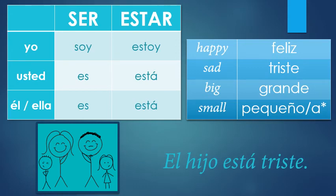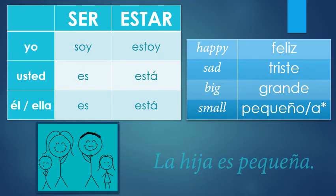Last but not least, 'the girl is small.' What's a girl or a daughter? The daughter is hija. Small is pequeña — but remember, hija is feminine, so you would say pequeña. You use ser because it's permanent: la hija es pequeña.